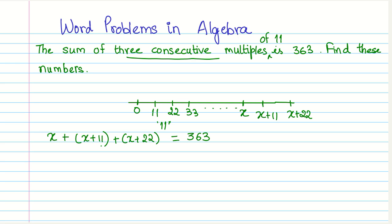If we solve this, so we have X plus X plus X, that gives us 3X, and 11 plus 22 gives us 33, equals 363. This gives us the algebraic equation, and we can proceed to solve this further.